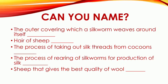The next questions — can you name: the outer covering which a silkworm weaves around itself; the hair of sheep; the process of taking out silk threads from the cocoon; the process of rearing of silkworms for the production of silk; and the sheep that gives the best quality of wool.